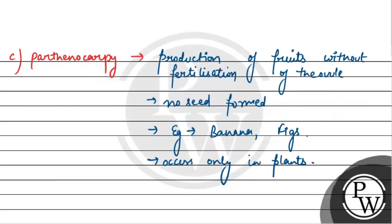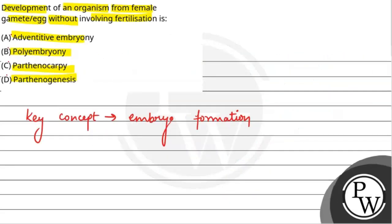Toh hamare question ka answer kya hai — development of an organism from female gametes without involving fertilization — the correct answer is option D, that is Parthenogenesis. Yahan par agar female part specifically nucellus ya integument given hota, toh answer ho sakta tha Adventitious Embryony. Lekin since yahan par specifically given hai ki female gamete ya egg se produce hota hai, toh Parthenogenesis is going to be the answer. I hope you understood it well, best of luck.